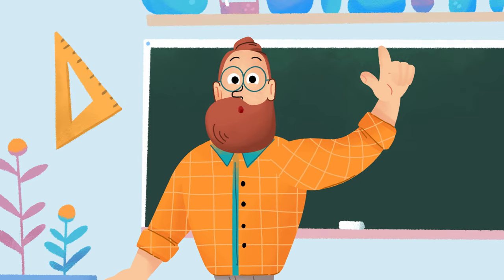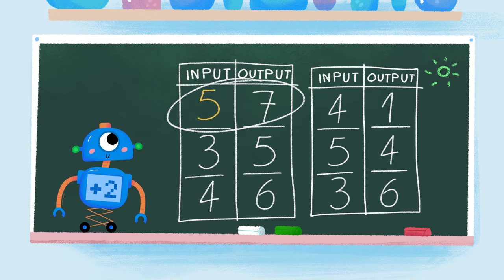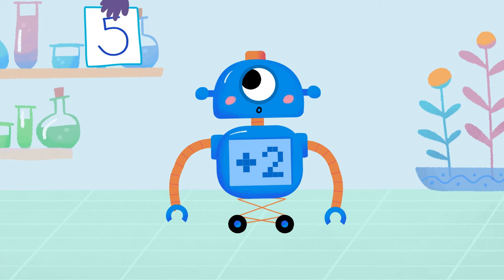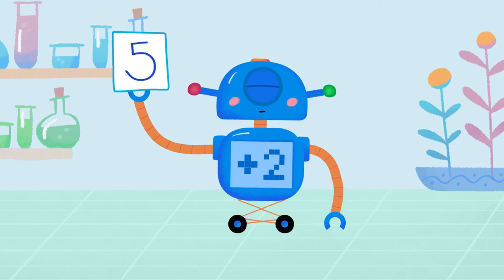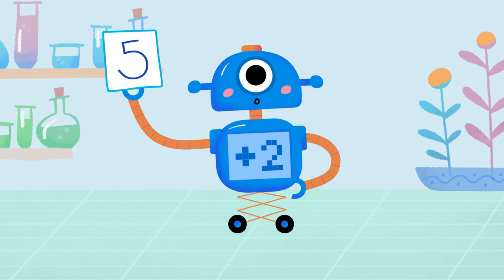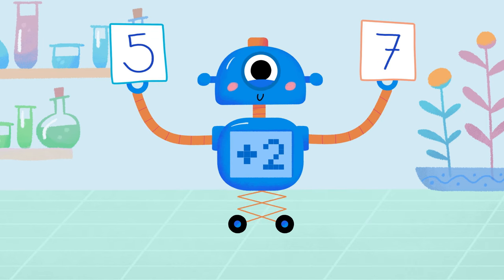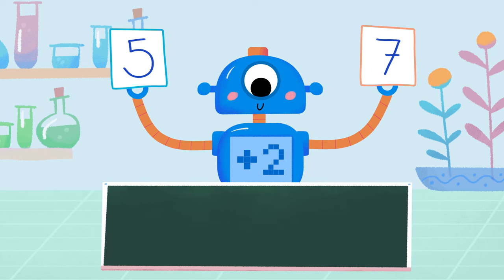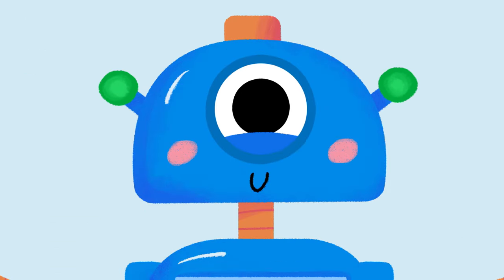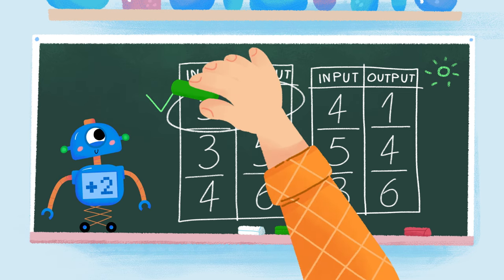Let's use the robot to help too. Five goes in. It's the input. Let's see what the output will be. It's seven. We already know the rule of this robot is plus two. If five goes in and we add two, does seven come out? Yes. It means that the robot's rule works here.